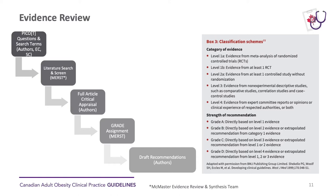The PICO questions, search terms, and search strategies were designed by the authors, the executive committee, and the science committee. The literature search and screening of the initial results was conducted by MERS — the McMaster Evidence Review and Synthesis team — who screened articles for relevance based on the search terms we had decided. They then sent a link to a digital platform called Distiller, where authors logged in to review abstracts and titles, ending up with a final list of full articles to be critically reviewed to decide the level and category of evidence.